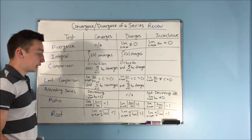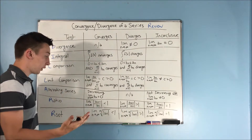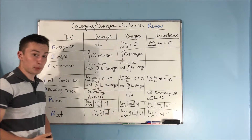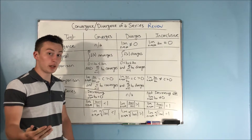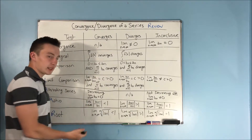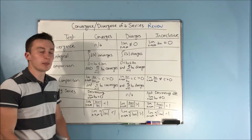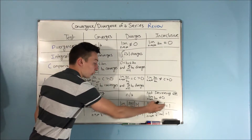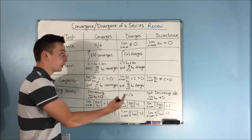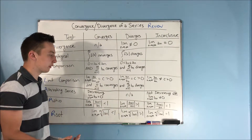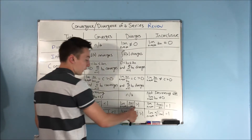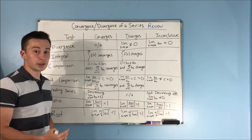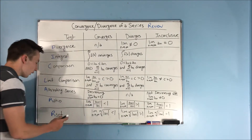The next test is the ratio test. You're taking the limit as n approaches infinity of the absolute value of a sub n+1 over a sub n — plugging in n+1 for n. If that limit is less than 1, it converges; greater than 1, it diverges; equal to 1, it's inconclusive. How I like to remember this: if the limit is greater than 1, it's big, and that means it diverges.